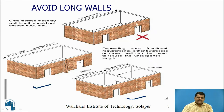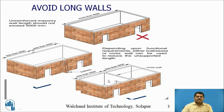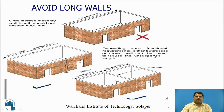For this type of configuration, you can provide a buttress or pillar to reduce the wall length to less than 5 meters. If that is not functionally possible, you must go for a cross wall or intermediate wall. This will reduce the 5-meter length and also make that region stronger. Depending on functional requirements, either buttress or cross wall can be used to reduce the unsupported length and reduce the slenderness ratio of the wall.